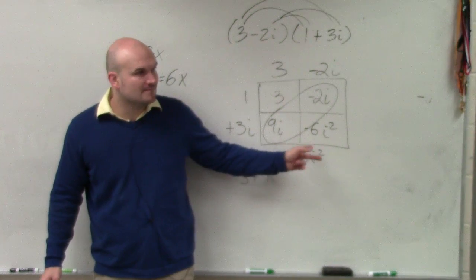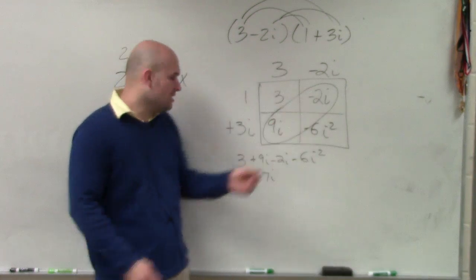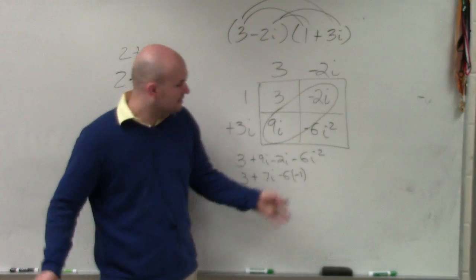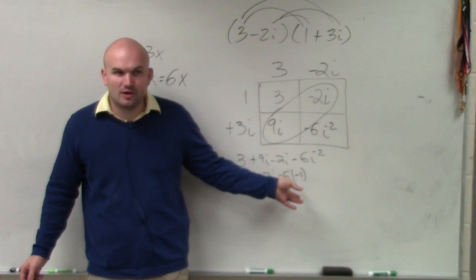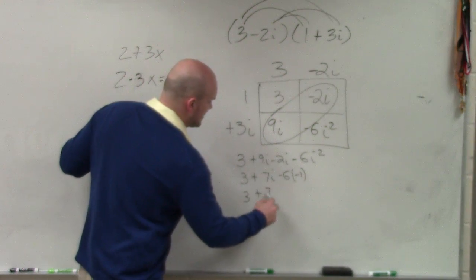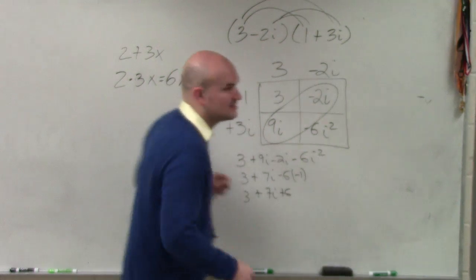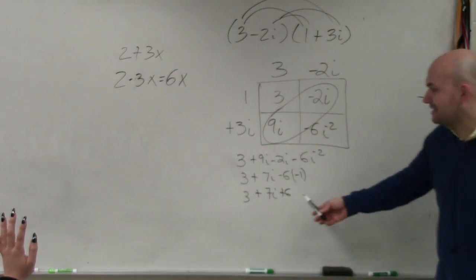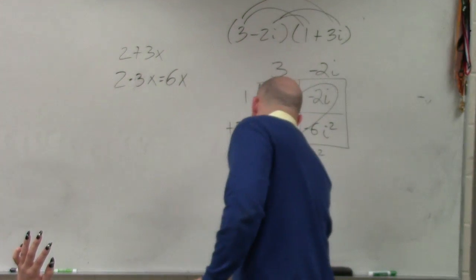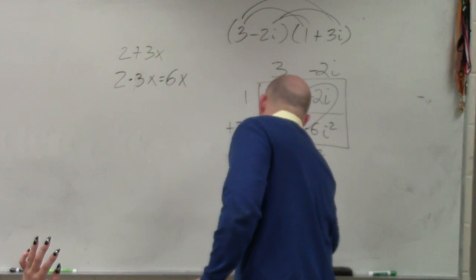What does i squared represent? Negative 1. Minus 6 times negative 1. Now, what's negative 6 times negative 1? Positive 6. So I have 3 plus 7i plus 6. Now, I can go back and add my real terms, or my real numbers, which is 3 and 6, which would be 9 plus 7i.